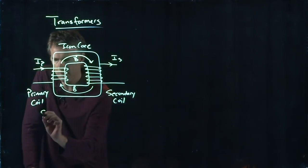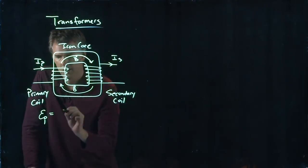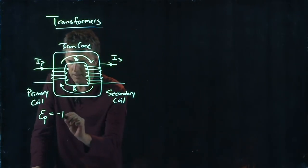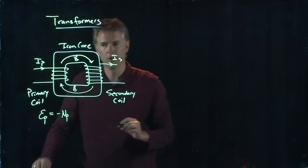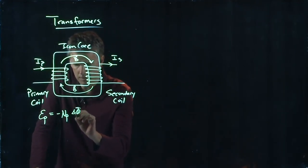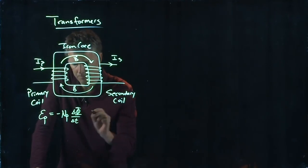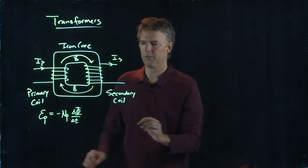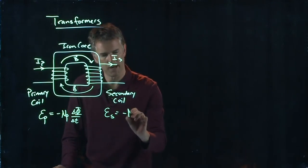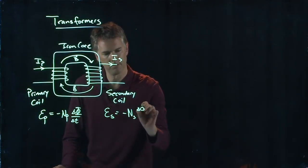And let's see if we can write down some properties. There is an EMF in the primary side, and that EMF is the number of turns of the primary coil times delta phi over delta T. There is, of course, an EMF in the secondary coil, which is minus N sub S delta phi over delta T.